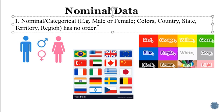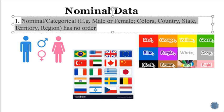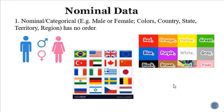So nominal data has no order — a name of a person, a name of a region, a name of a color, a country. These types of data come under the category of nominal data.